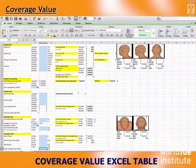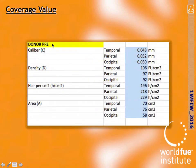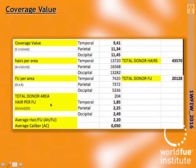Now it's time to start using the coverage value Excel table — the second tool we are proud to share with you. In that Excel table, you must fill up only the blue cells on the pre-operation box, and we will obtain all the data needed. We must introduce the caliber, density, hair, graft, and areas. The first information we receive is the coverage value of the donor area: 9 in temporal, and 11 in parietal and occipital. To give you a little context, a good donor varies between 10 and 15.